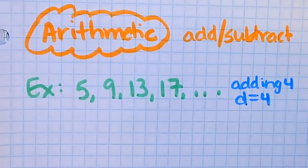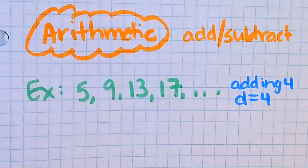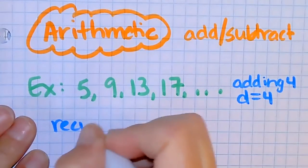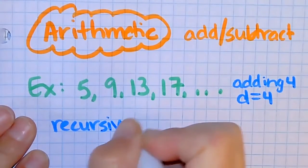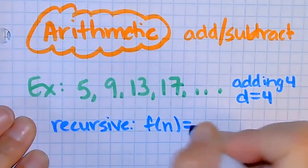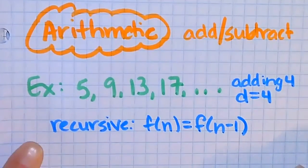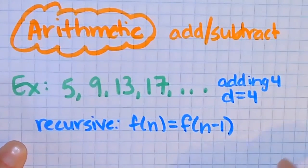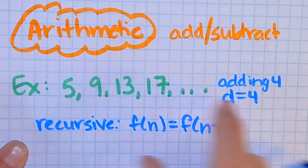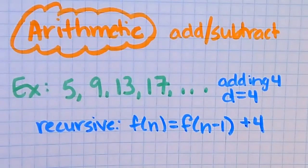Now we're going to do two things: we're going to write a recursive and we're going to write an explicit. The recursive is always the same format: F of N is equal to F of N minus one, and then you're going to do whatever you're doing to get each of those values. In this case we're adding four, so you go plus four. That is how you do recursive.